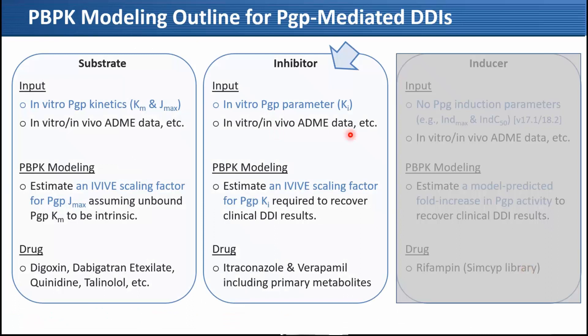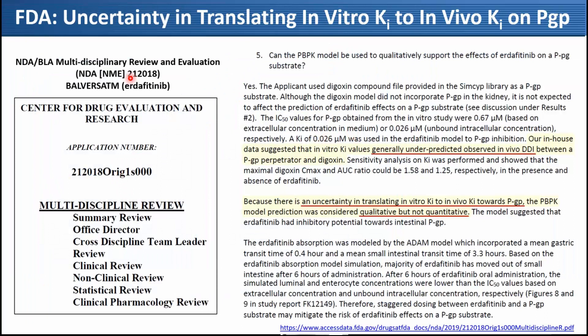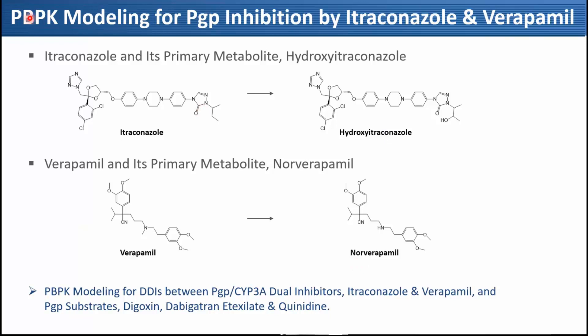Now I'd like to talk about the inhibitor. First, an FDA review document for elvitegravir indicated that in vitro KI values generally underpredicted observed in vivo DDI between P-gp perpetrators and digoxin, and because of uncertainty in translating in vitro KI to in vivo KI for P-gp, PBPK model prediction was considered qualitative but not quantitative. This was a bit shocking, since we always say PBPK modeling is quantitative. So we anticipated needing an IVIV scaling factor for P-gp KI. We selected itraconazole and verapamil as P-gp inhibitors, also including their primary metabolites hydroxy-itraconazole and norverapamil — all of which are CYP3A/P-gp dual inhibitors. We selected P-gp substrates digoxin, dabigatran etexilate, and quinidine based on available clinical DDI results.